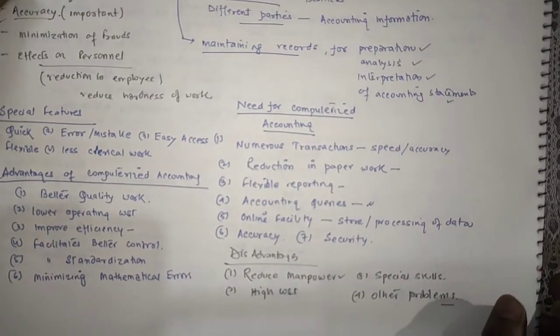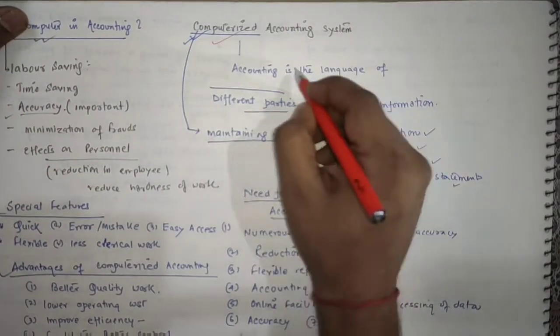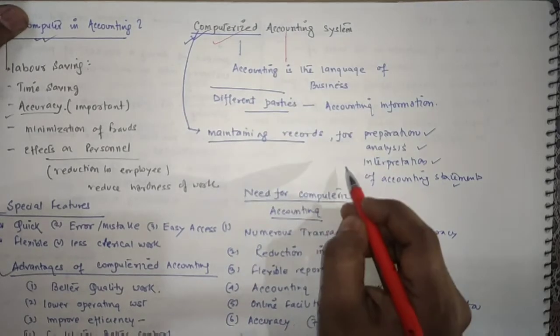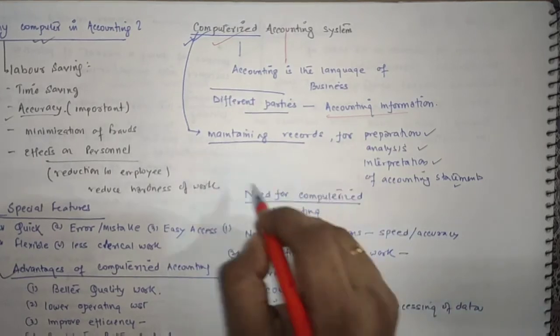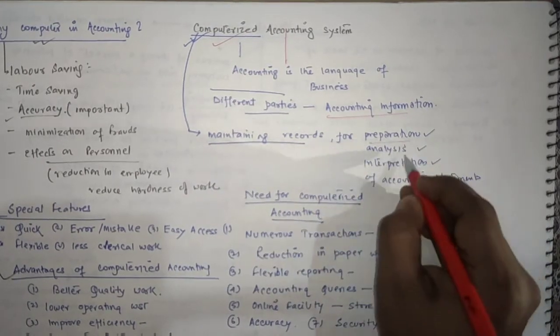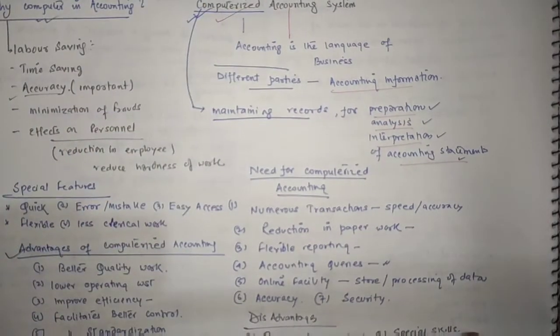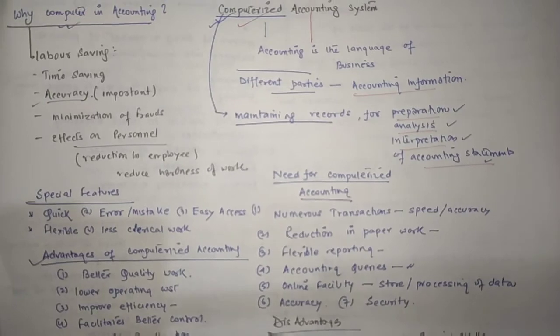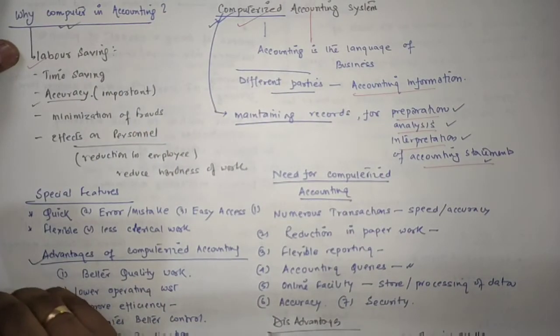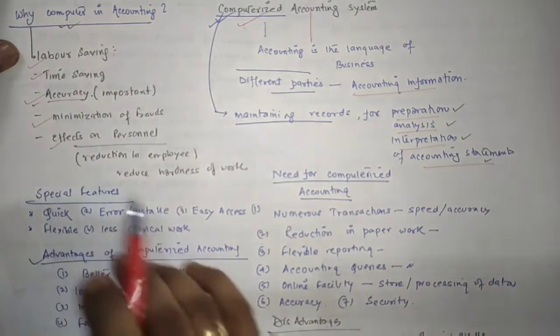So what we learned today? We learned about computerized accounting system. Accounting system is the language of business. We know that various parties depend on accounting information, and computer prepares, analyzes, and interprets the accounting statements in the form of accounting information system. Now why we require computer in accounting? Because it saves time, it saves labor, it provides accuracy, minimizes frauds, and effects on personnel.